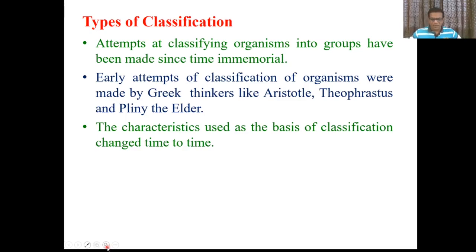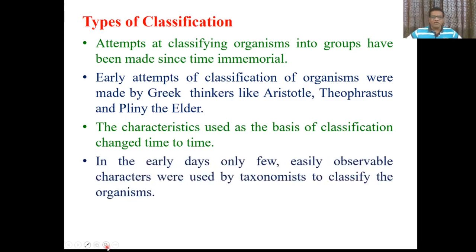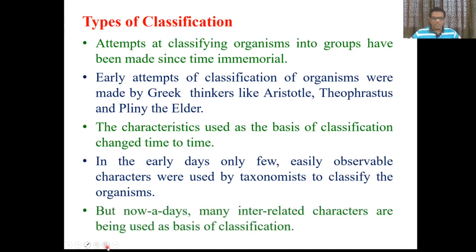Therefore the classifications given by them certainly differ from modern ones. The basic characters of classification have been changed over time. In the early days, only a few easily observable characters were used by taxonomists to classify organisms. But now we consider many interrelated characters - cytological characters, anatomical characters, embryological characters, pollen morphology, and many other characters.